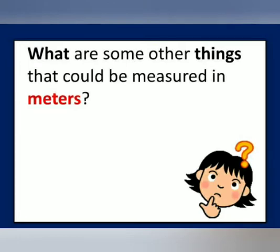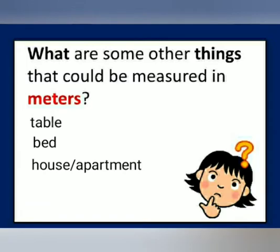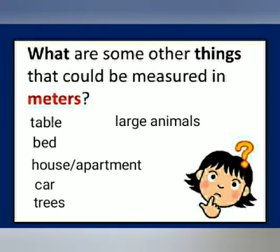So what are some other things that could be measured in metres? Let's have a think. A table. A bed. A house or apartment so we can see the size. A car. Trees. Large animals, just like the whale. Even ourselves.